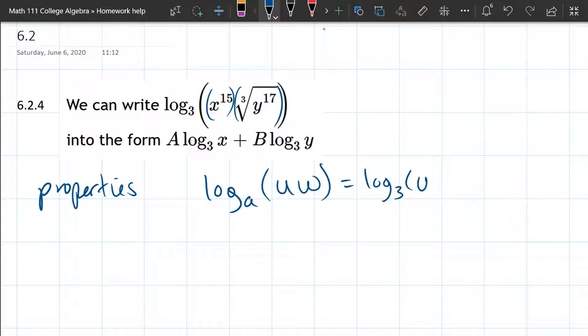That's log base 3 of U plus log base A. Your base better match. Log base A of W. So product inside is a sum outside.